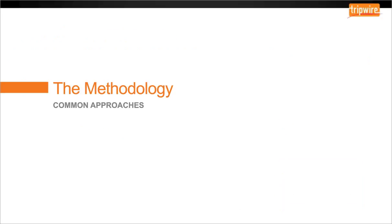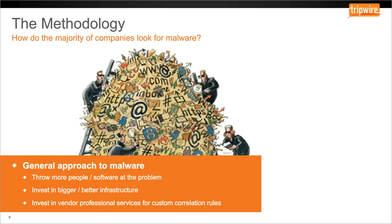This brings us to the methodology — how most companies are currently approaching the haystack. How do the majority of companies look for malware? Most companies that invest in security, and in particular detecting malicious activity, are facing spiraling IT security costs. This is due not only to the number of vulnerabilities being released or exploited on a daily basis, but also by the number of new malware codes being released. More than one million new malware codes being released is a significant number on a daily basis.